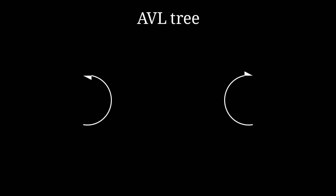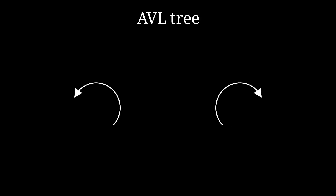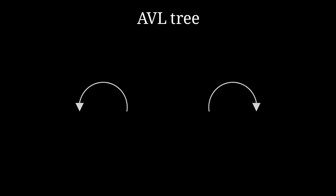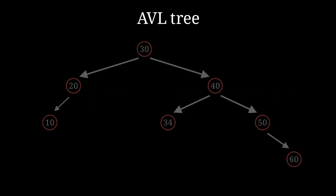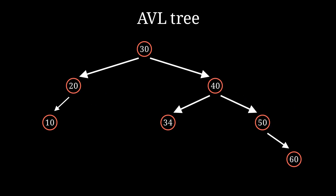An AVL tree uses rotations to keep the binary tree balanced. First, we need to define the height and balance factor. The height at a node is the length of the longest path from that node to a leaf node. The height of the leaf nodes is zero.